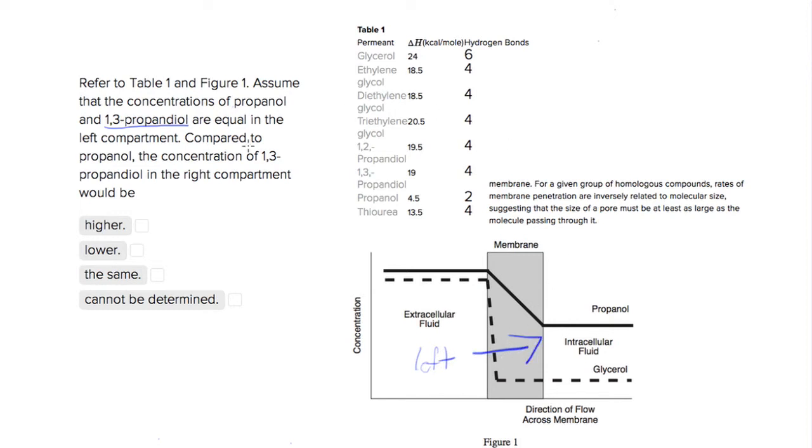So the question wants us to say, compared to this propanol, the concentration of this 1,3-propandyl in the right compartment would be what?